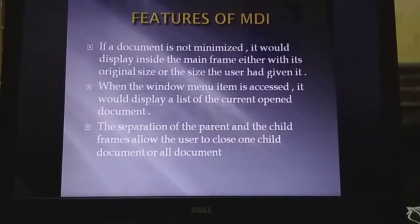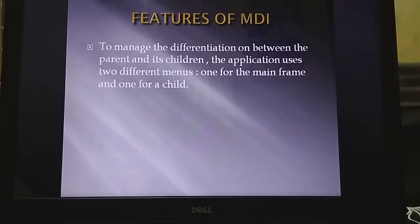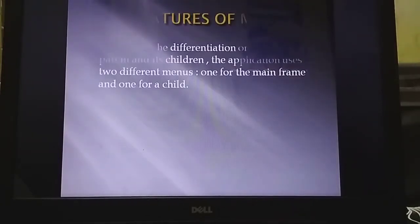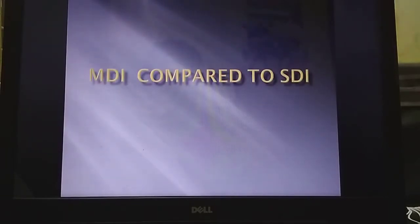When the window menu items are accessed, it displays a list of currently opened documents, and to separate the parent and child frames, it allows the user to close one child document or all documents. To manage and differentiate between the parent and child window, the application uses two different menus — one for the main frame (parent window) and the other for the child window.